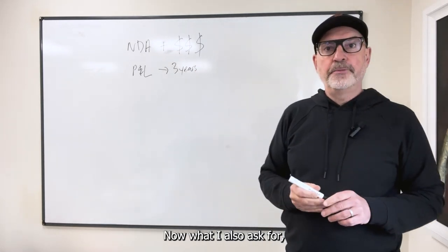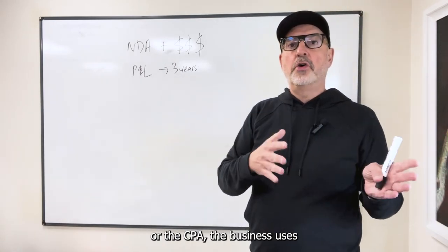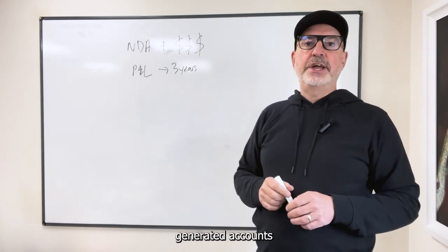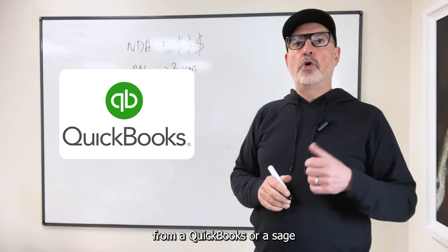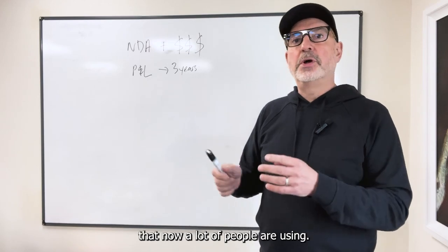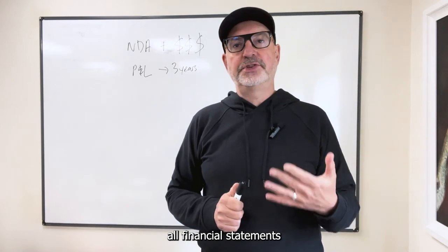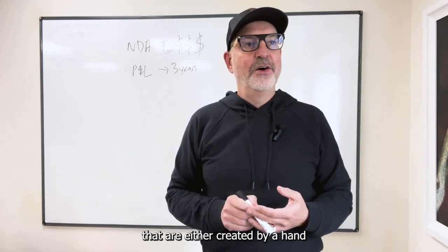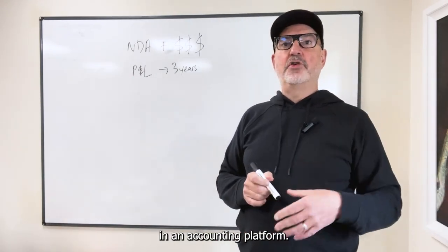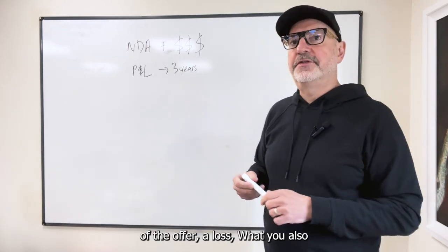Now, what I also ask for, these are accounts which are produced either by the external accountant or the CPA that the business uses, or these could be internally generated accounts from QuickBooks or Sage if you're in the UK, or Xero, which is an online accounting platform that now a lot of people are using. So you definitely want that. What you don't want are financial statements that are either created by hand or created like an Excel spreadsheet. You want the information in an accounting platform, so then you know it's got a lot more chance of being true and accurate. So you want three years of the profit and loss.